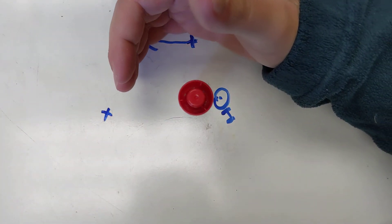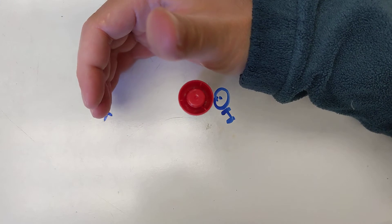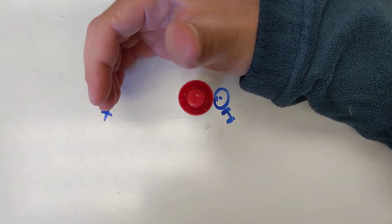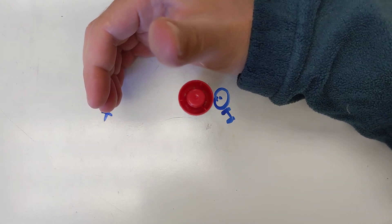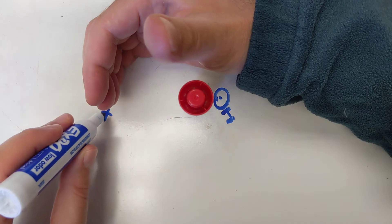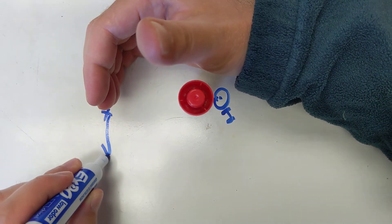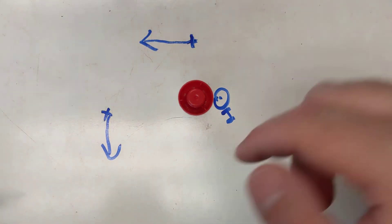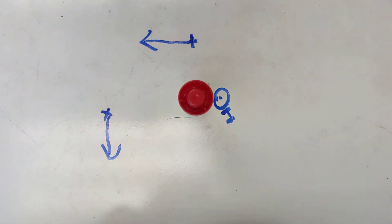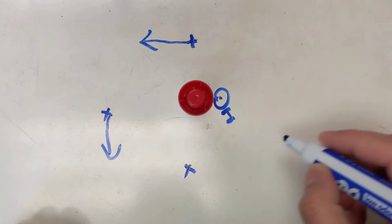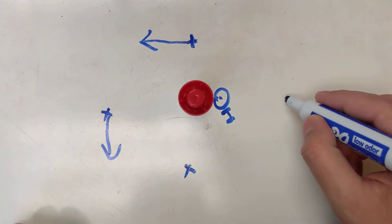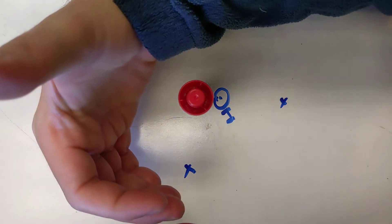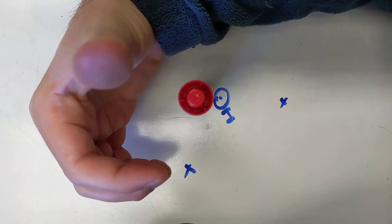Now if I want to find the direction of the magnetic field here, I need to do the same thing — my thumb in the direction of the current, my fingers now point this way. And same thing if my observation location is here, I would do something like this.